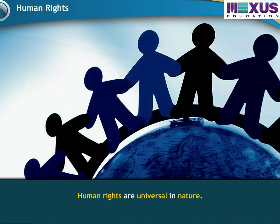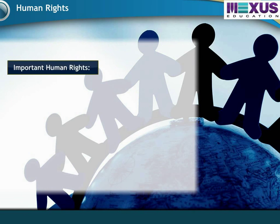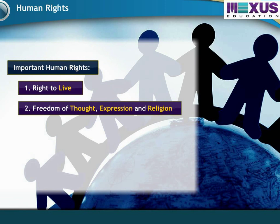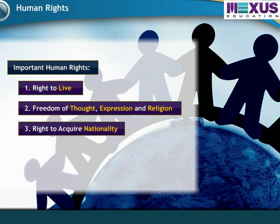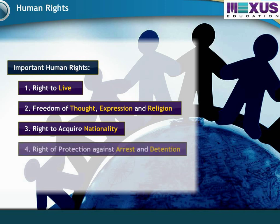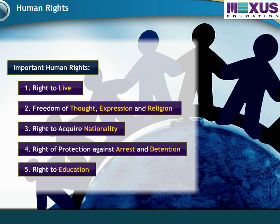Human Rights are universal in nature. Some of the most important human rights include the right to live, the freedom of thought, expression and religion, the right to acquire nationality, the right of protection against arrest and detention, and the right to education.